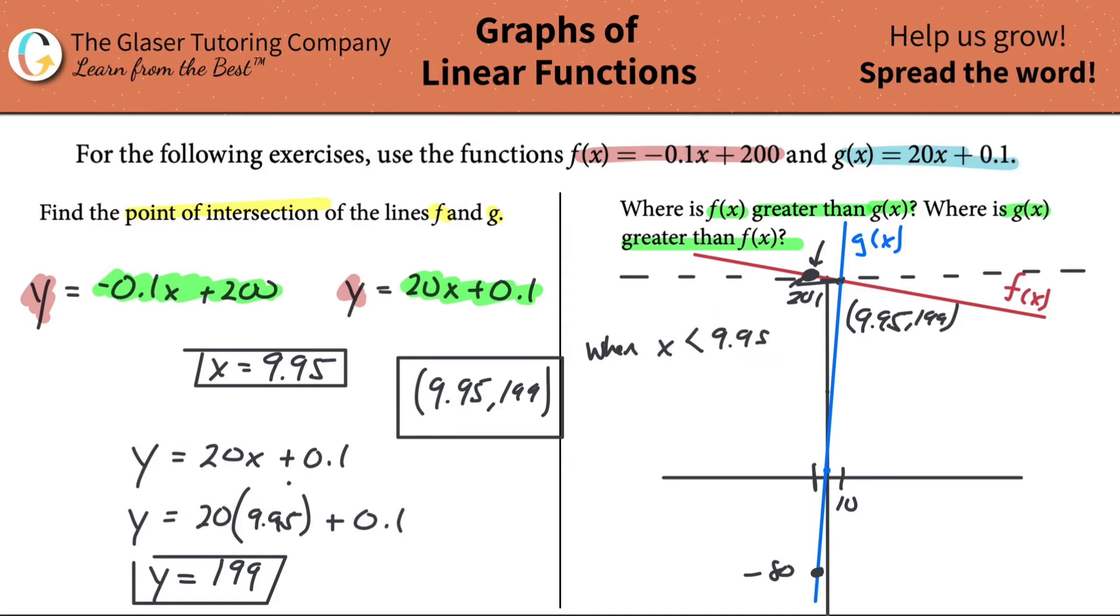So remember, that would be just to the left of that point and any point to the left. Because it's less than 9.95. So when x is less than 9.95, f then of x is greater than g of x, meaning the y value of this equation is greater than the y value of that equation.